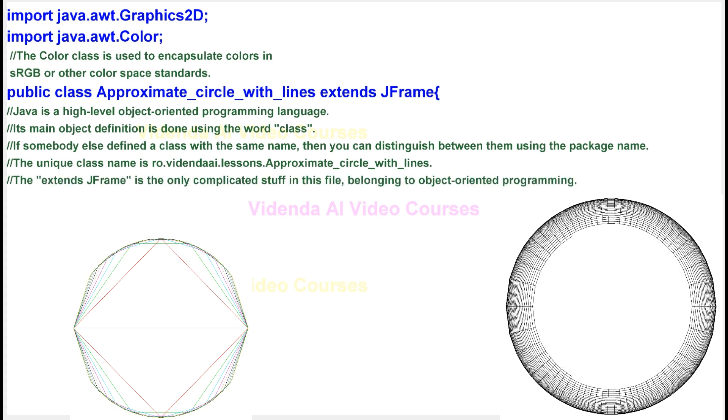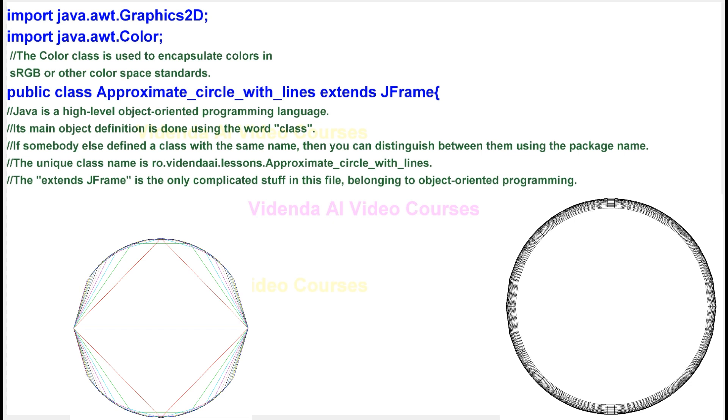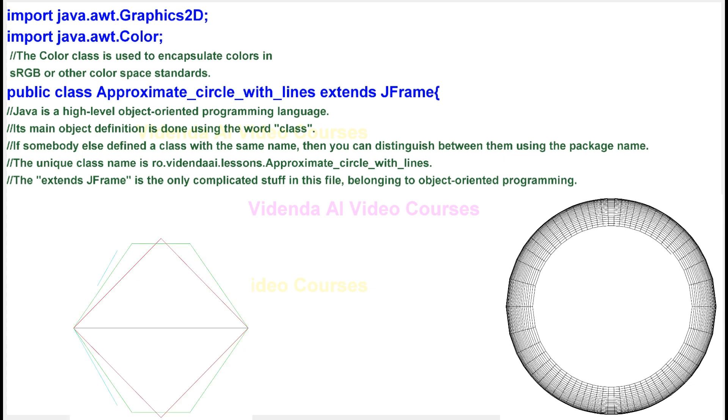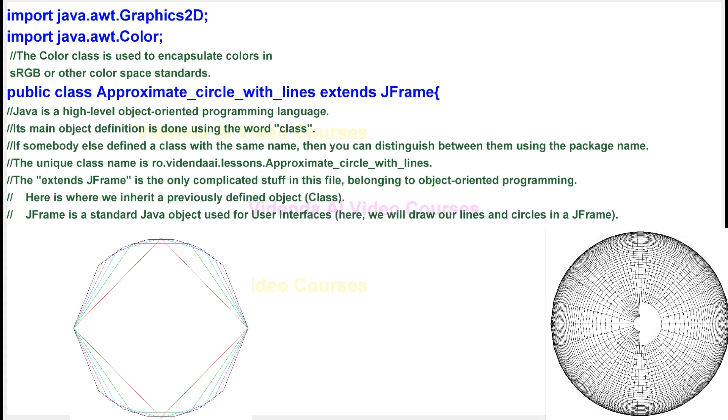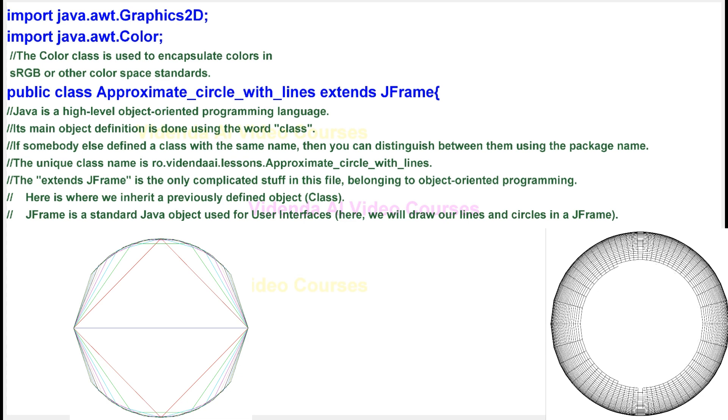The extends JFrame is the only complicated stuff in this file, belonging to object-oriented programming. Here is where we inherit a previously defined object class. JFrame is a standard Java object used for user interfaces. Here, we will draw our lines and circles in a JFrame.